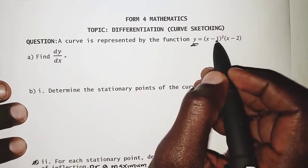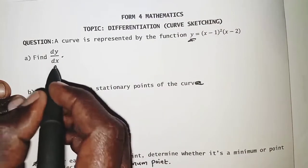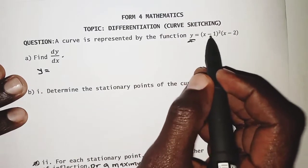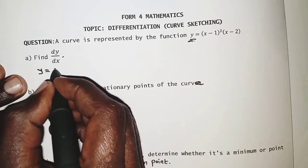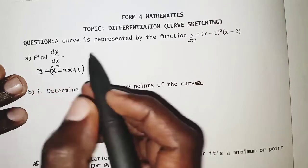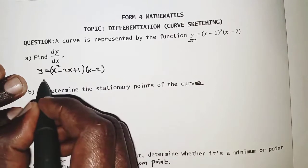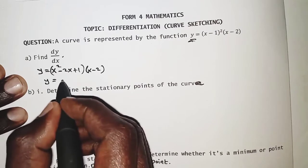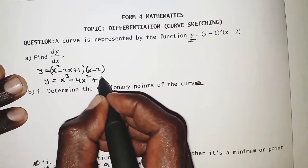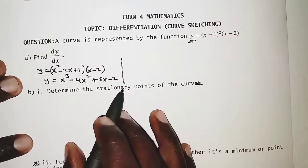Before we differentiate, the first thing we need to do is expand. So y = (x − 1)²(x − 2). Expanding the quadratic part, (x − 1)² = x² − 2x + 1, and then we multiply by (x − 2). This gives us y = x³ − 4x² + 5x − 2.